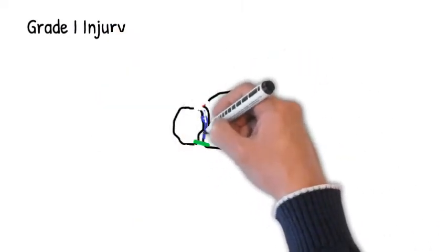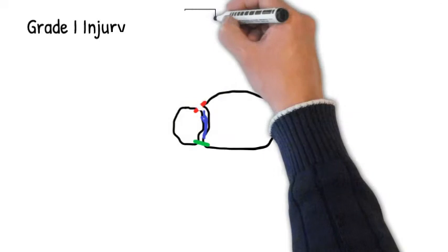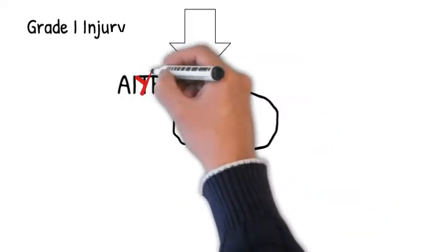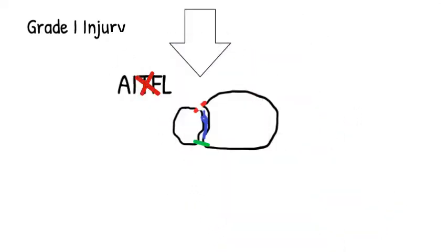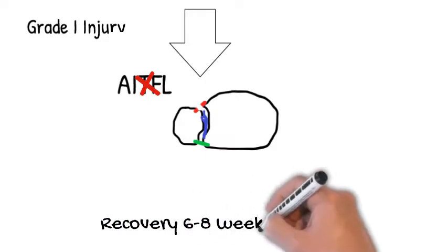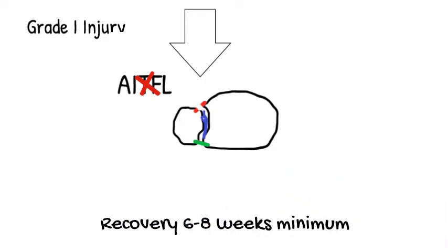For a grade 1 injury, you just injure the ligament at the front, that's the AITFL. That's a grade 1 syndesmotic injury. They generally don't need surgery, but the recovery time is longer than you think.